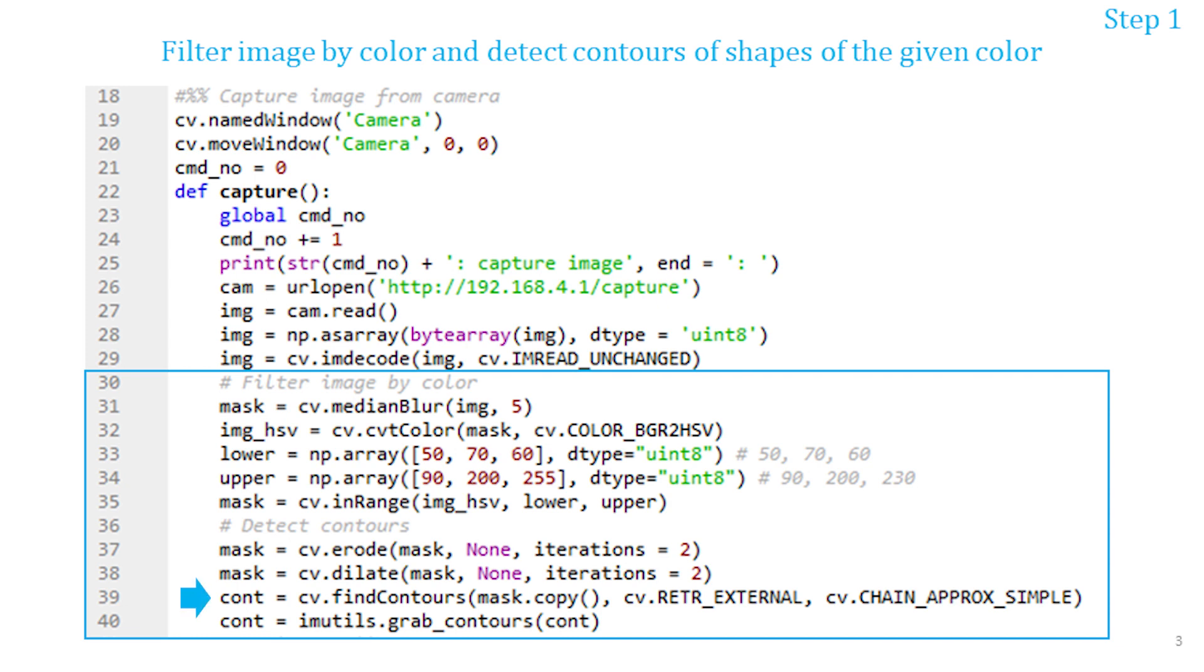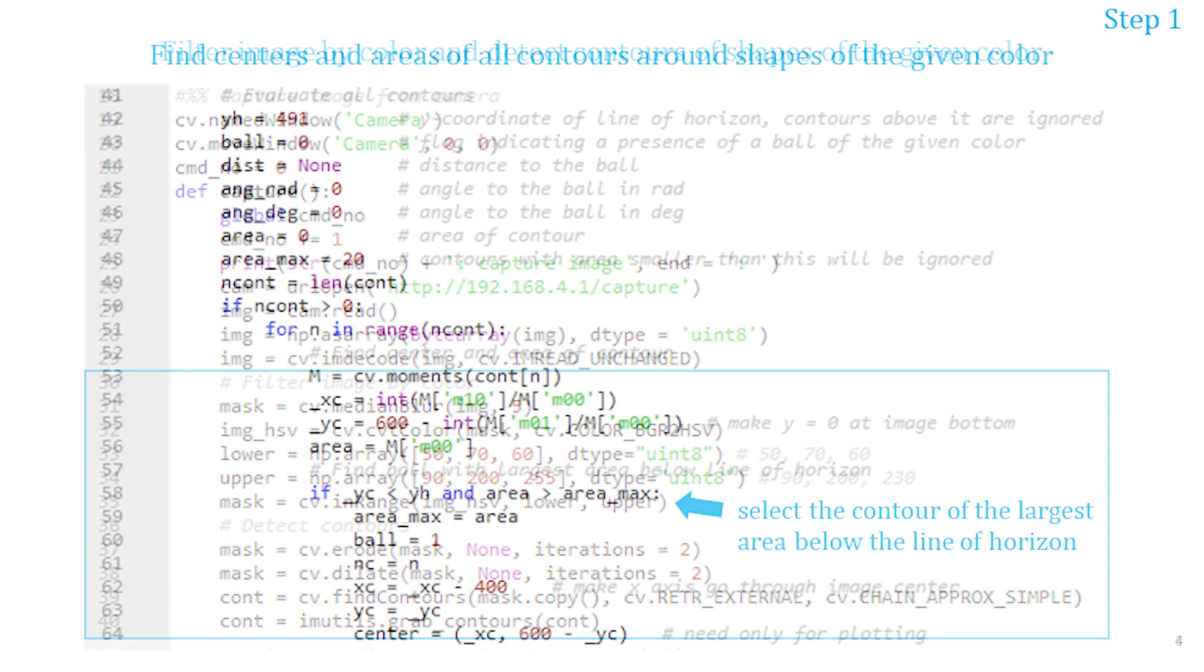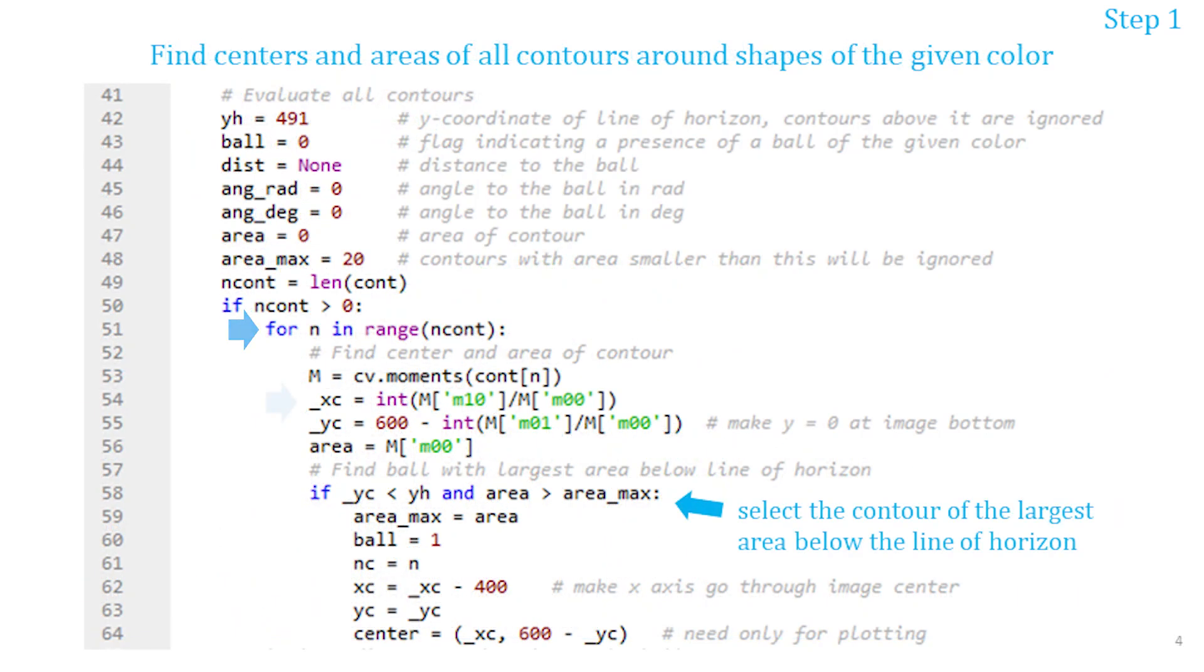Then I will detect the contours of these shapes. Next I will go through each contour and determine its center and area. I will ignore the contours that are above the line of horizon. Among the remaining contours I will select the one with the largest area.